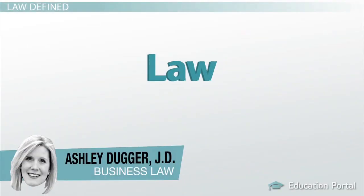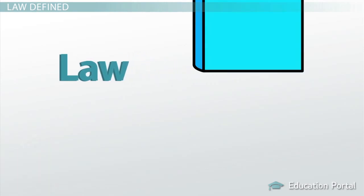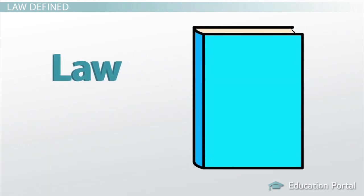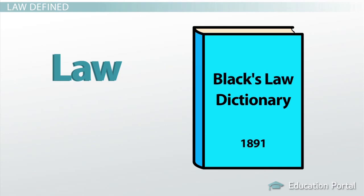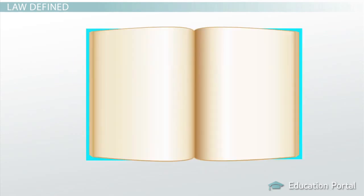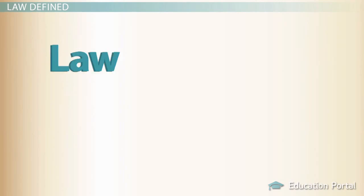What is law? As students of the law, when we want to define a particular legal term, there are a few sources we can legitimately look to. As with other subjects, let's start with the dictionary. When we want to define a legal term, we will look to Black's Law Dictionary. This is an important tool for attorneys and law students. This dictionary serves as the leading standard authority for defining legal terms and has been published since 1891.